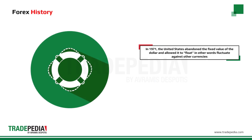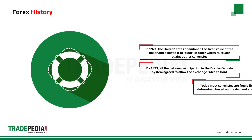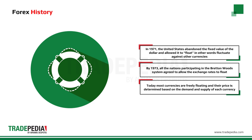In 1971, the United States abandoned the fixed value of the dollar and allowed it to float — in other words, fluctuate against other currencies. By 1973, all the nations participating in the Bretton Woods system agreed to allow the exchange rates to float. Today, most currencies are freely floating, and their price is determined based on the demand and supply of each currency.